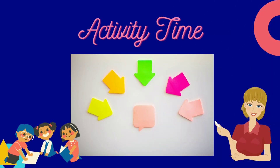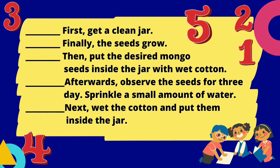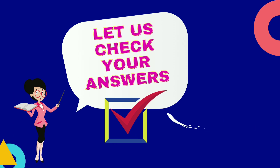Activity time. Have you experienced growing mung seeds in cotton? Here are the steps on how to do it. Arrange the following directions correctly by putting the number before each direction. Use the numbers 1 to 5 to show order. Arrange the following directions. Let us check your answers.